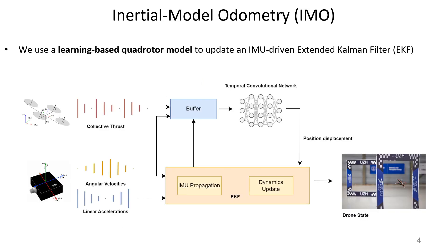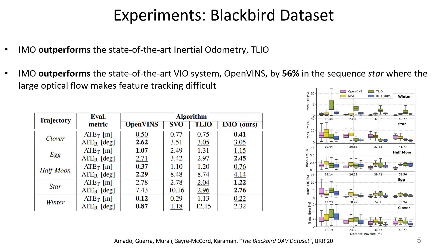We propose an inertial odometry algorithm that combines a model-based extended Kalman filter with a learning-based quadrotor model. The learning-based component is a temporal convolutional network that takes as inputs a time window of collective thrust and gyroscope measurements, and predicts the relative distance travelled by the robot in such a time window. The network output is then used to update the EKF, which is propagated by an IMU kinematic model. We validate our approach in the BlackBird dataset, where we show that our method outperforms the state-of-the-art inertial odometry system, TLIO.